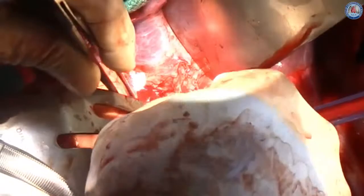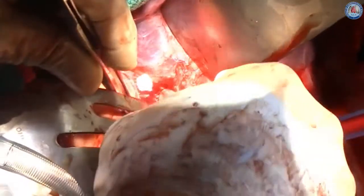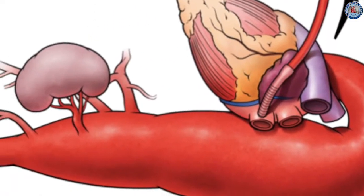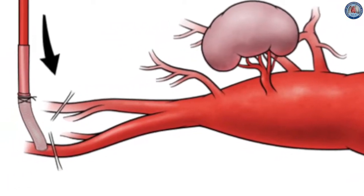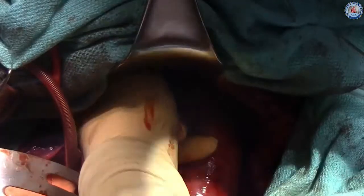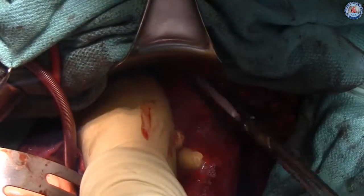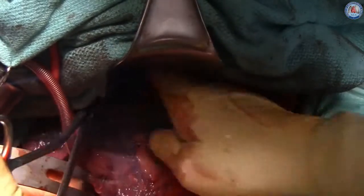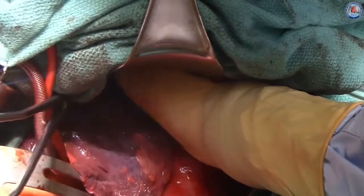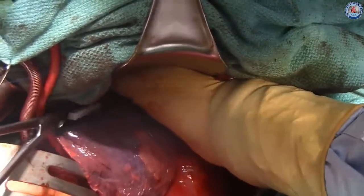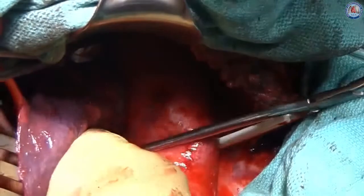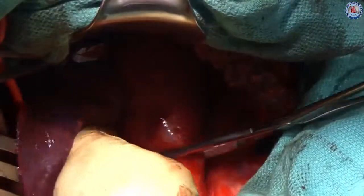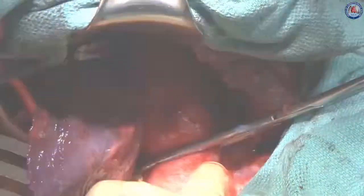The inferior pulmonary vein is now cannulated for distal aortic perfusion, which takes blood to the left common femoral artery. A Fogarty padded clamp is then applied proximally distal to the left subclavian artery, and sequential clamping is achieved by placing another clamp in the mid-descending thoracic aorta.